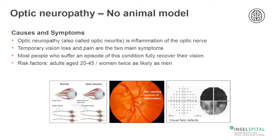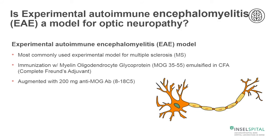As you can see in the bottom images, to the left you see a schematic of an inflamed optic nerve. In the center, you see the disc swelling in the area of the optic nerve head, which gives you a hint of optic nerve inflammation. The main symptoms are temporary vision loss and pain. Fortunately, most patients suffer only an episode of this condition, which fully recovers over time. Risk factors include adults aged 20 to 45, and women are twice as likely as men to suffer from optic neuropathy.